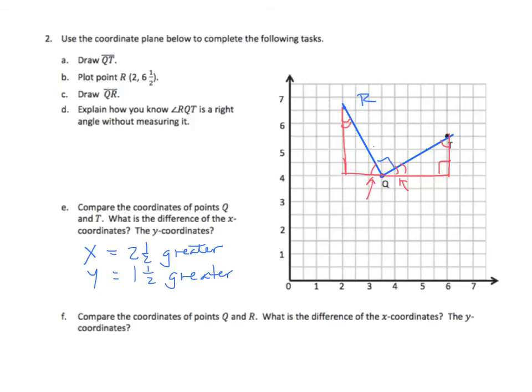So now we need to finally compare the coordinates of Q and R. So let's talk about the difference in the X coordinates. Well, in the case of the X coordinates, we go from here to here. Remember, the X coordinate, again, starts at 3 1/2, and it goes to 2. So what do we have? We have its X is 1 1/2 less than, and again, we should write a complete sentence. And the Y is 1 1/2, 2, 3, 4, 5, 5 halves, which is 2 1/2 greater. So the Y is 2 1/2 greater.